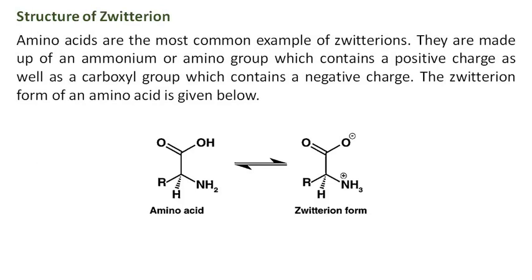Structure of zwitterion: Amino acids are the most common example of zwitterions. They are made up of an ammonium or amino group which contains a positive charge, as well as a carboxyl group which contains a negative charge. The zwitterion form of an amino acid is given below.